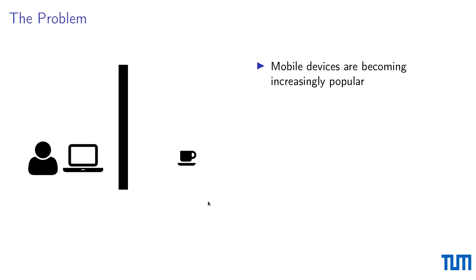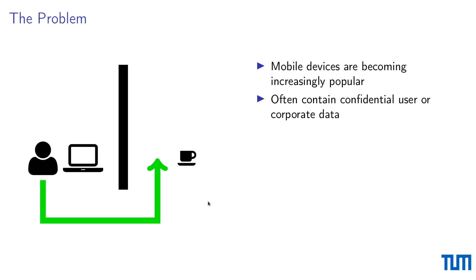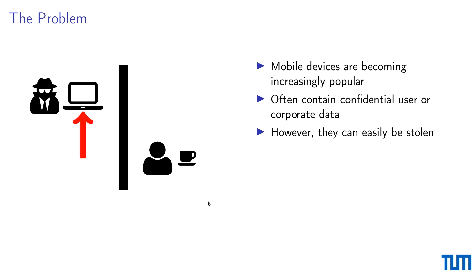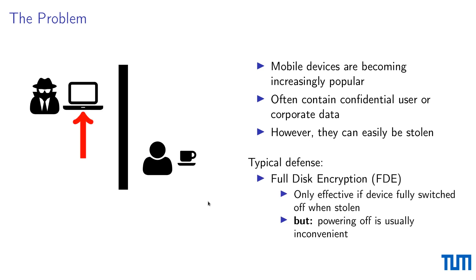Let's first quickly state what the problem is. We have more and more devices, and these devices contain more and more confidential user and corporate data. Of course, these devices can get easily stolen by an attacker, which is bad. Normally this problem is tackled with full disk encryption, however full disk encryption is only effective if the device is fully switched off, which is normally inconvenient, and we believe many users do not do this.